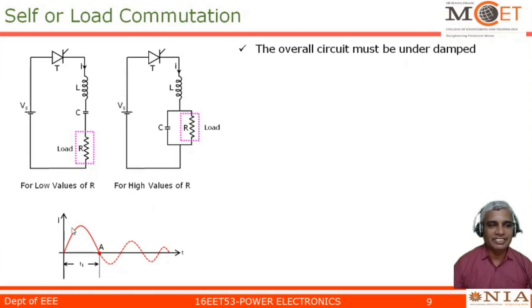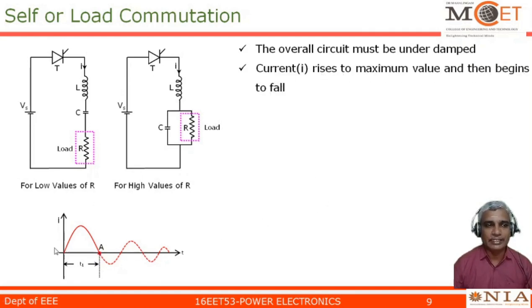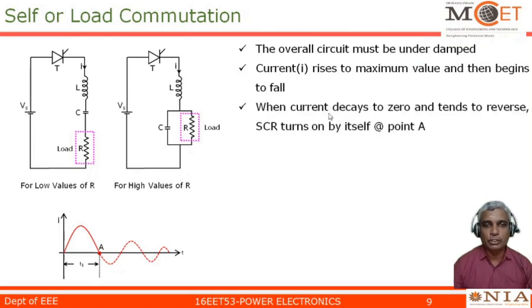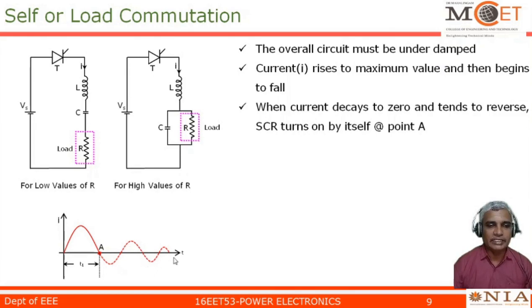The overall circuit must be an underdamped circuit. In an underdamped circuit, the DC current will not die out naturally to zero directly — it will cross zero and oscillate for some time before settling to zero. Current rises to a maximum value and then begins to fall, and when the current decays to zero and tends to reverse, the SCR turns off by itself at point A. This is very similar to what we have seen in natural commutation. The overall circuit being underdamped is the important condition to make the current waveform cross zero so that the device naturally turns off.